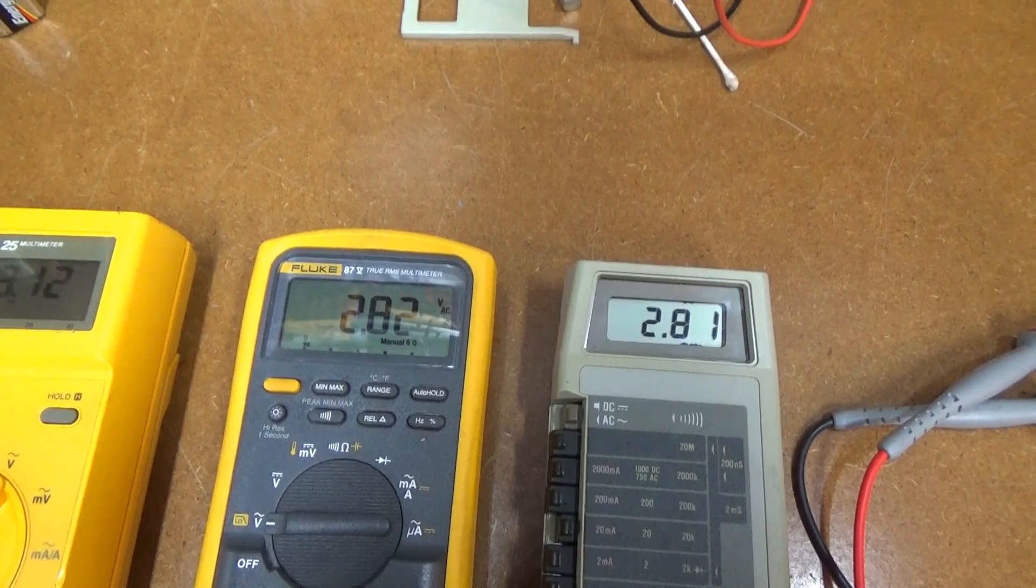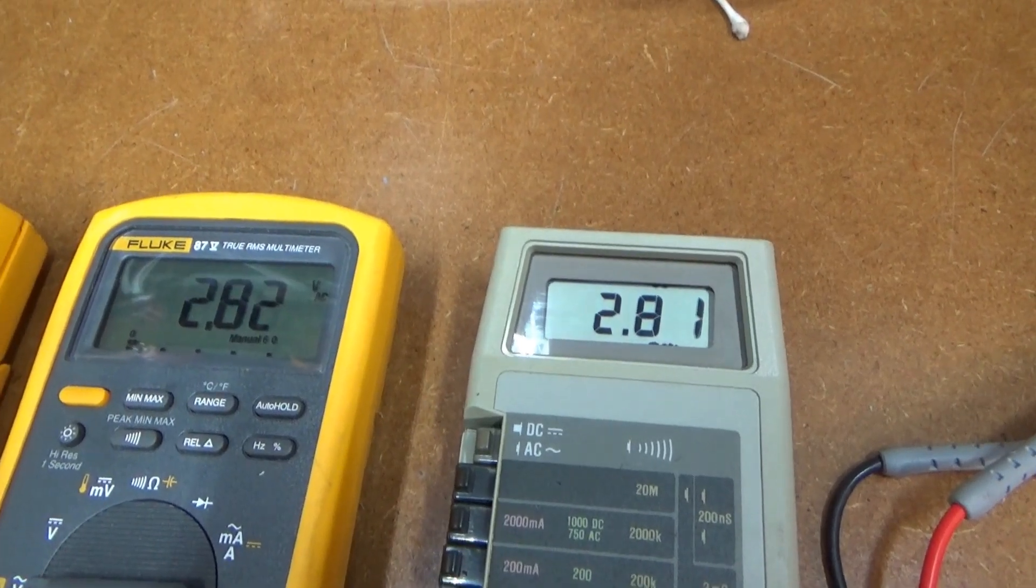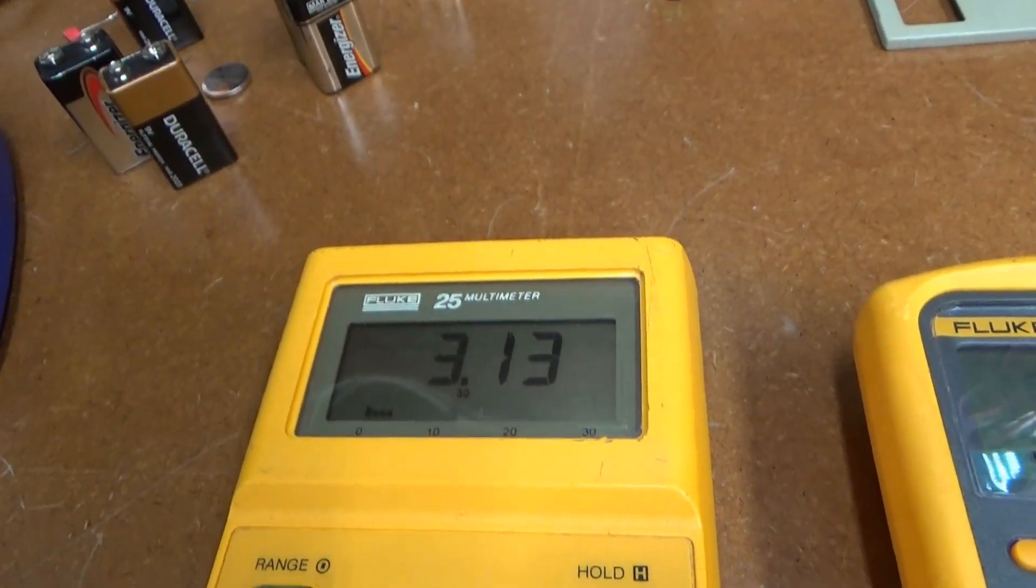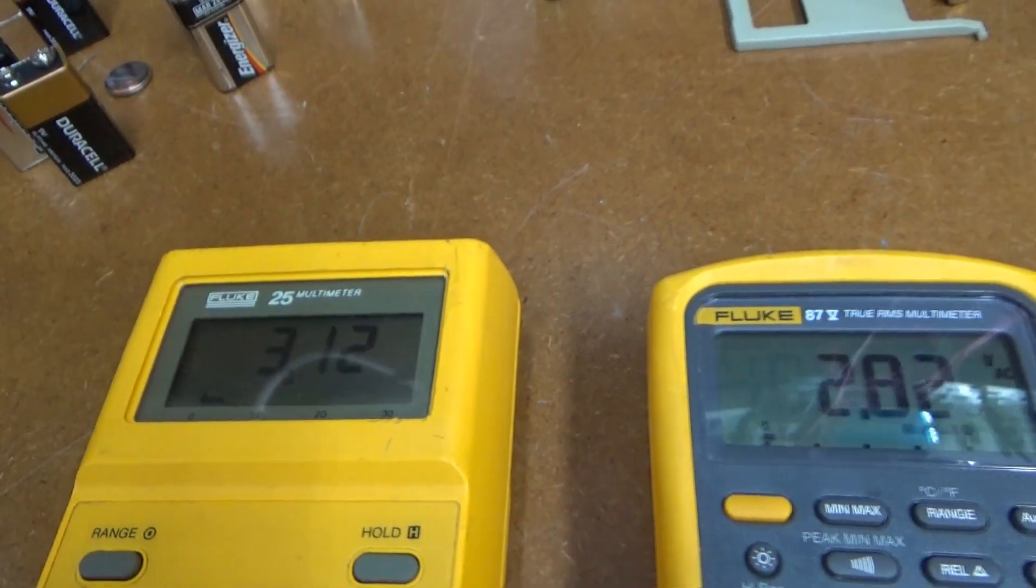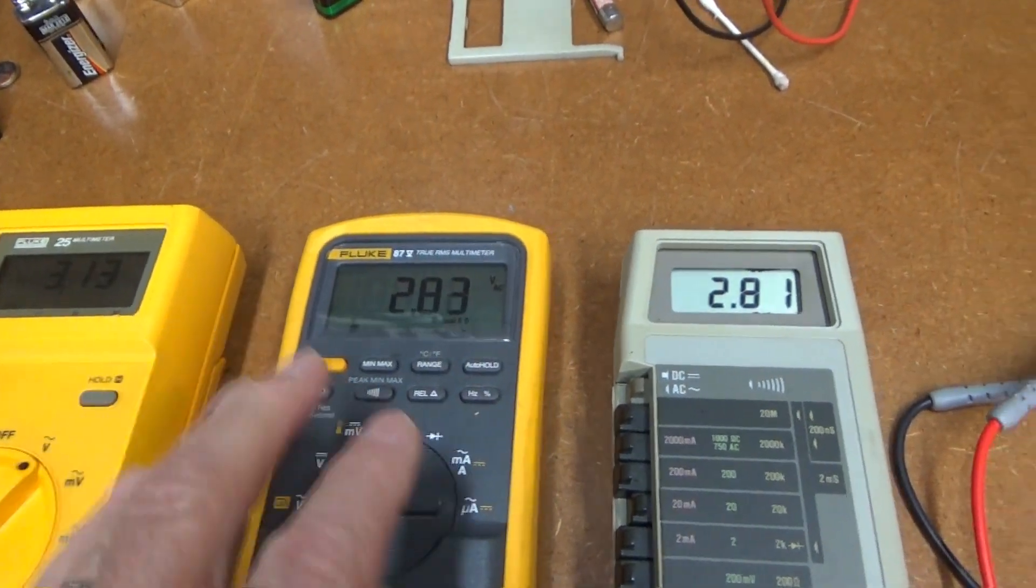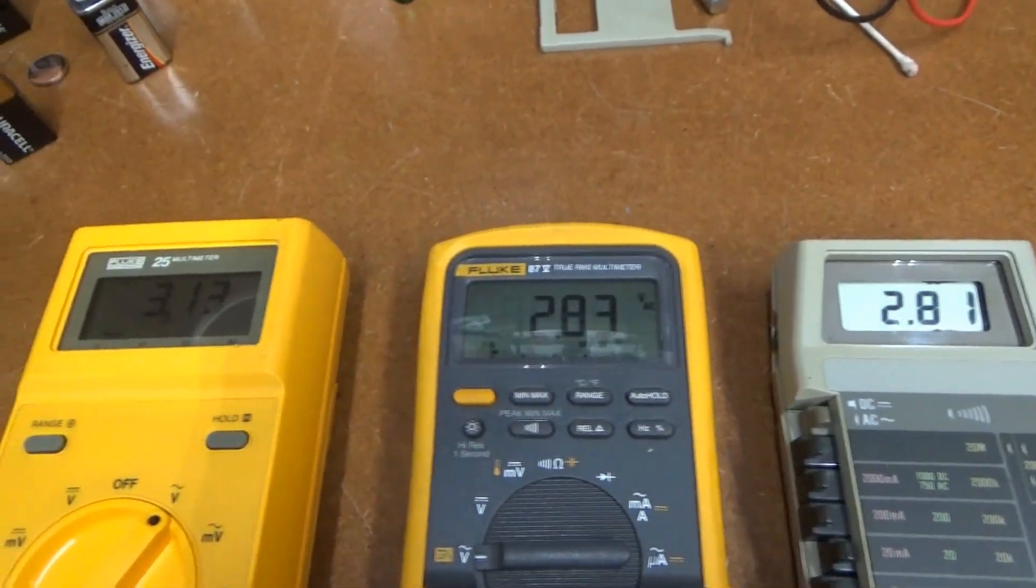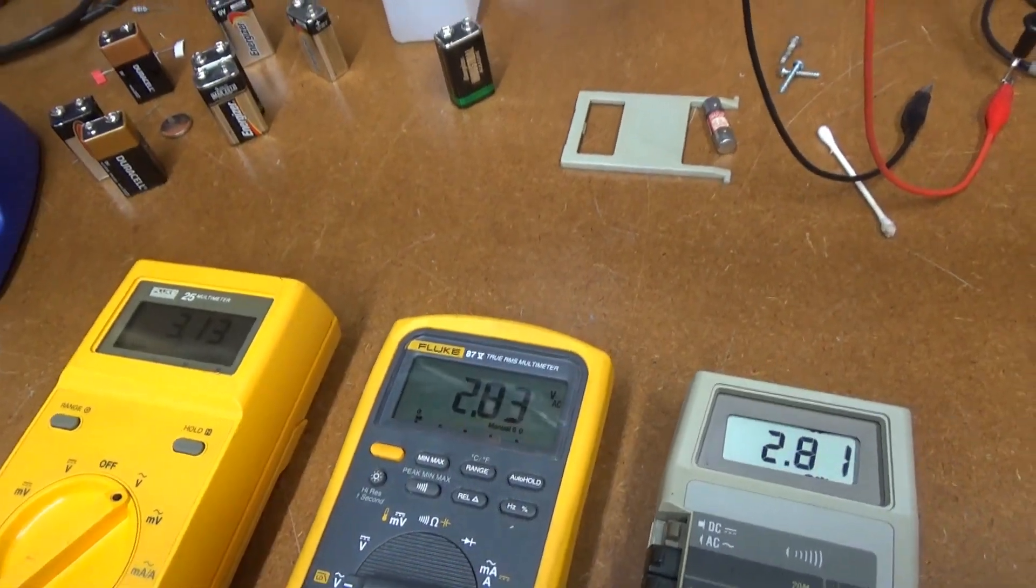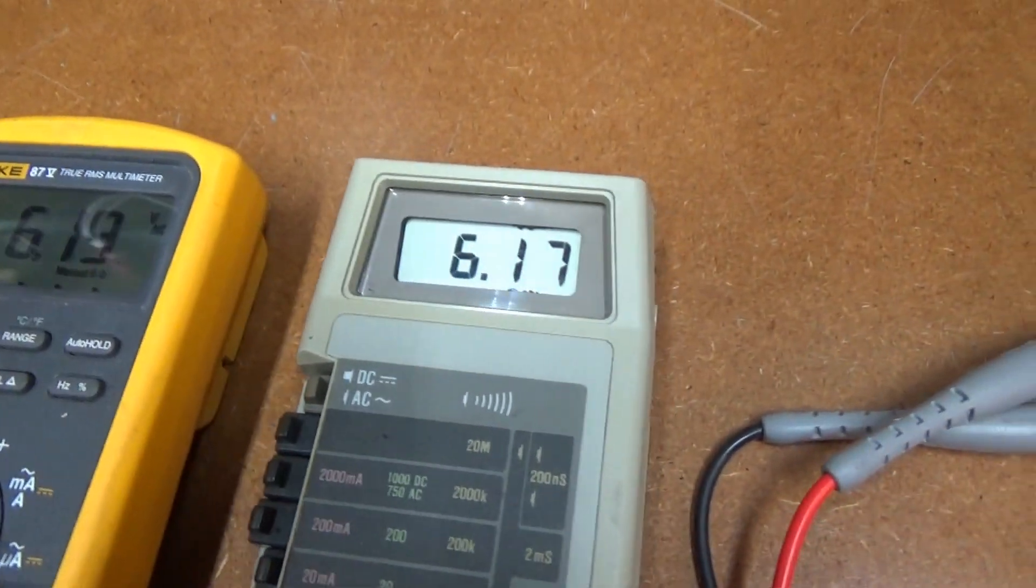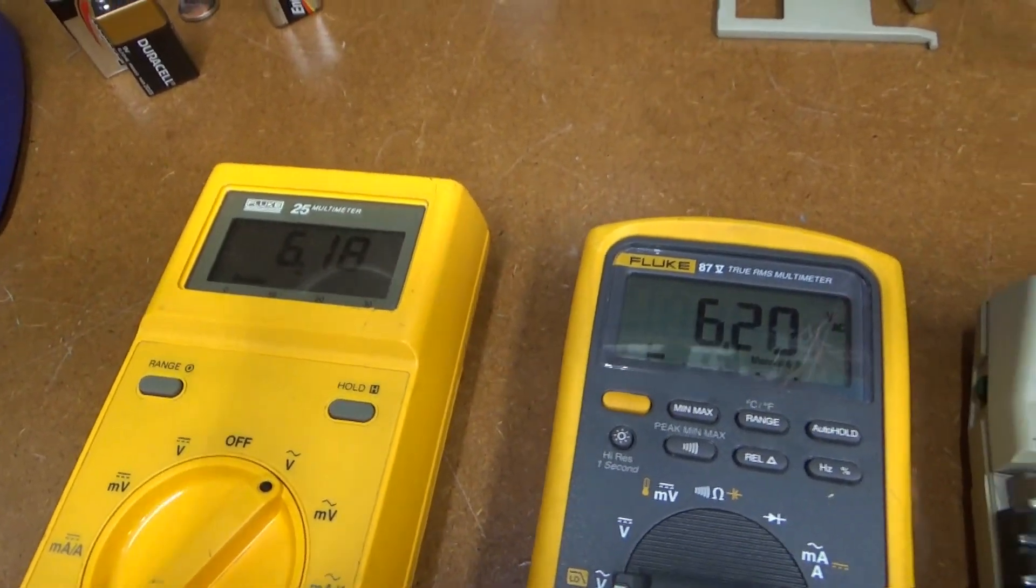Now watch what happens when I switch to a square wave on these. They all drop down just because of the source. But you see the two True RMS meters are reading about the same, 2.81, 2.82. But the average responding meter, this old Fluke 25, is measuring 3.12, which is how these things work. Average responding will read higher than a True RMS meter on a square wave. It will vary depending on what type of wave you have. But on sine waves, it will read pretty much the same.